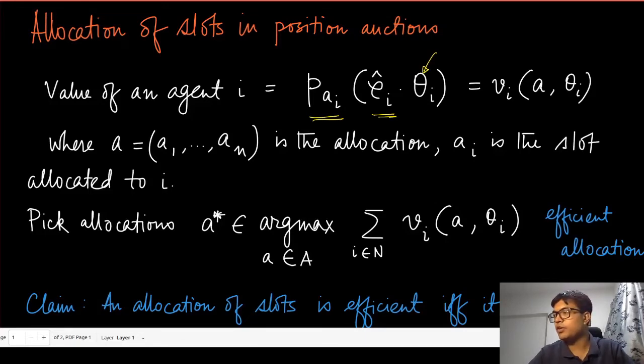From the point of view of the search engine or the publisher of this ad, the ρ_i component is estimated. What is a_i? a_i is essentially the allocated slot to agent i. The complete allocation is given by this vector a which gives the corresponding slots - a_1 to a_n are the different slots allocated to these different agents.